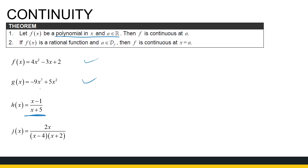The function h is continuous everywhere except where x is equal to 5. Similarly, function j is not continuous where x equals 4 minus 2, but for any other x values that function will be continuous.